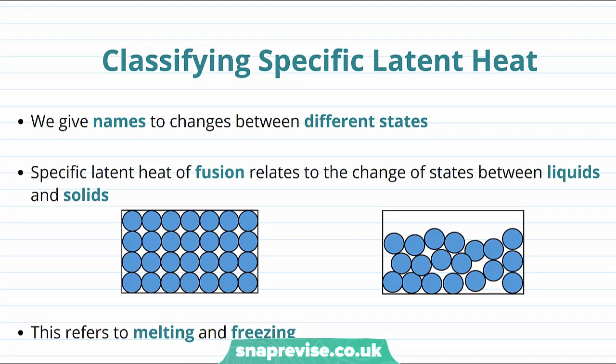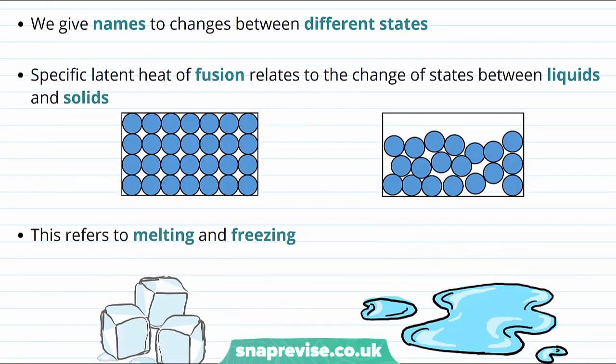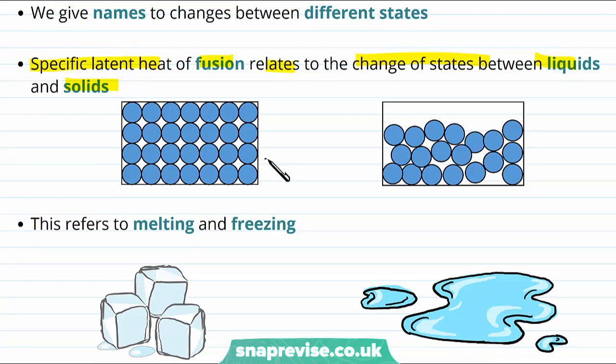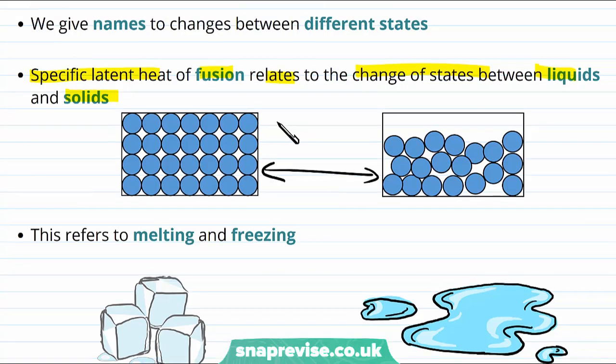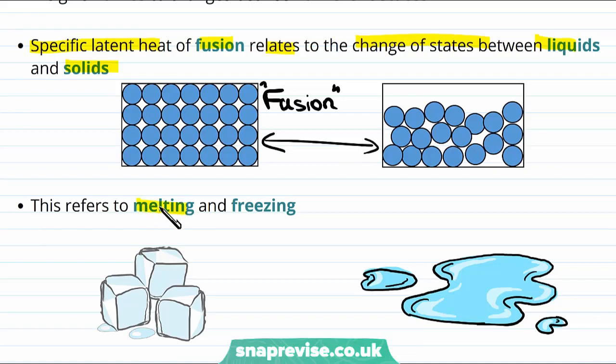Since we're realizing that the specific latent heat depends on what the change of state is, it's about time that we gave the different changes of state different names. The specific latent heat of fusion relates the change of states between liquids and solids. So it's the specific latent heat of fusion that tells us the energy required for the changes between liquids and solids. In one direction, fusion corresponds to melting, and in the other direction, from liquid to solid, fusion corresponds to freezing.